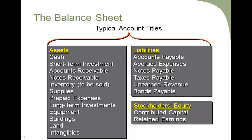On the liability side, the term 'payable' appears frequently — accounts payable, notes payable, taxes payable, bonds payable. Any time you see the word 'payable,' it means these are amounts owed to someone. Accounts payable is money owed to vendors and suppliers. Notes payable refers to a loan that is owed. Taxes payable includes income taxes, real estate taxes, and sales taxes — any kind of tax owed to a government agency.